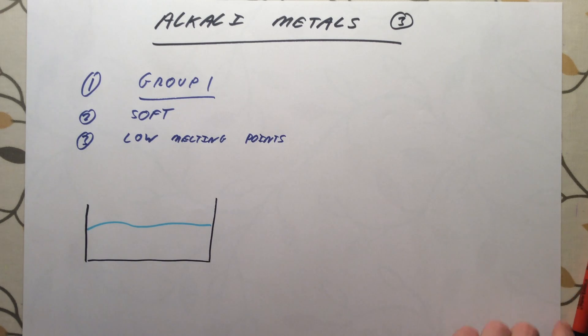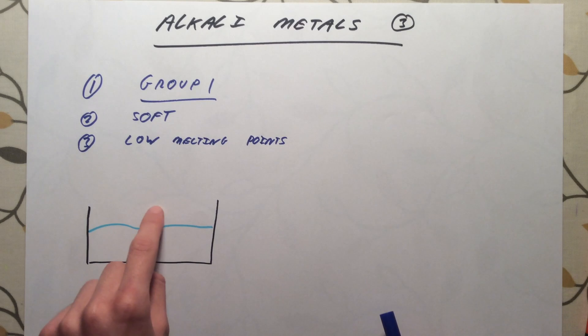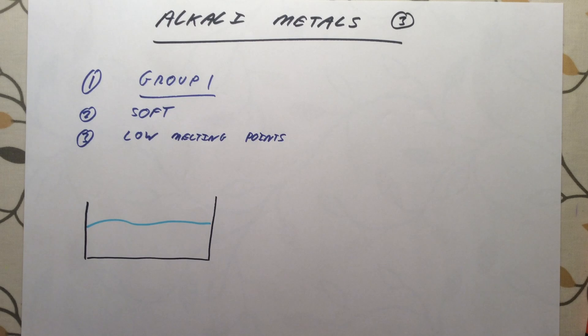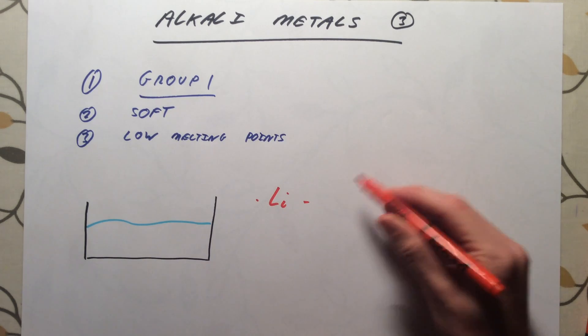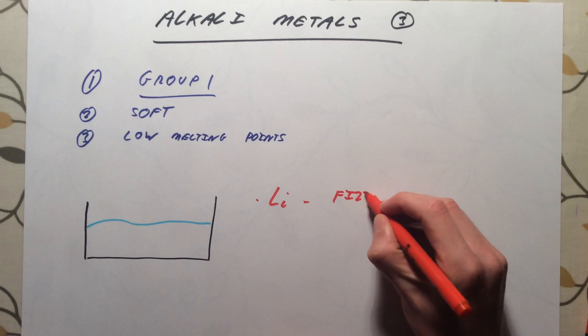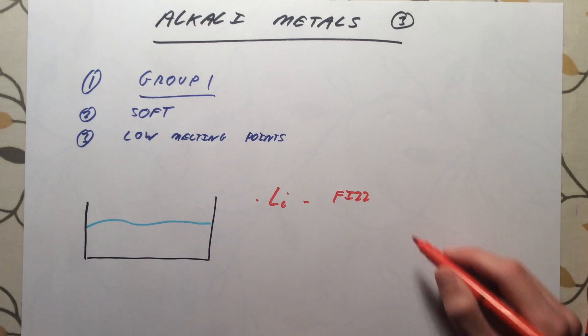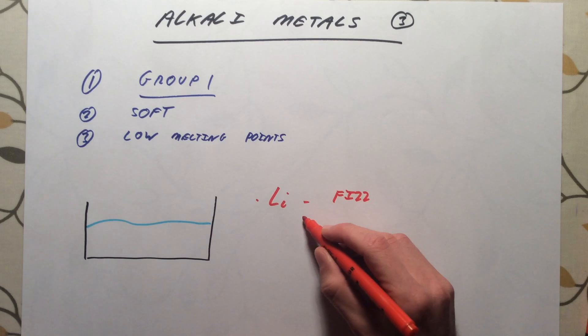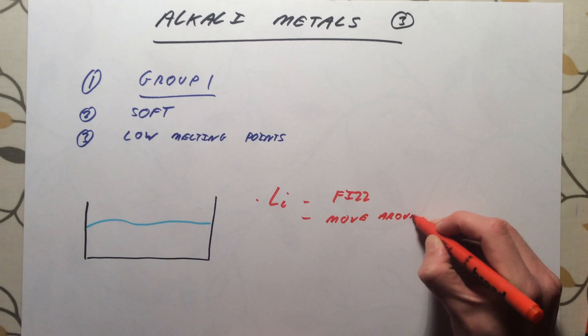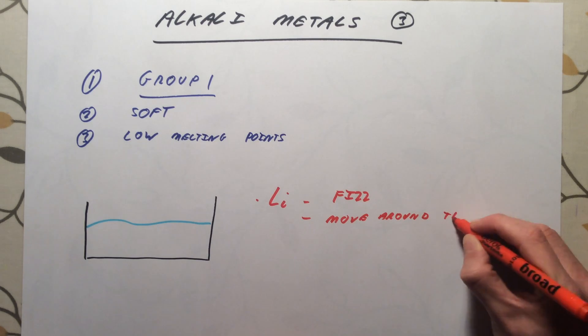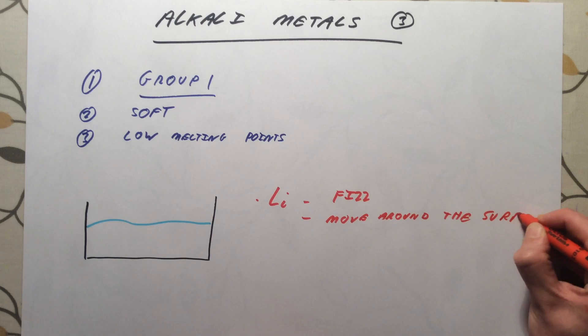When we drop the metals onto the water, they're all going to float on the surface. They've all got quite a low density and they're all going to react. We need to know the trends or be able to describe the pattern of how they react. The first one, lithium, we simply see this fizz, giving off bubbles of hydrogen gas, and it will move around the surface of the water. And that is about it.